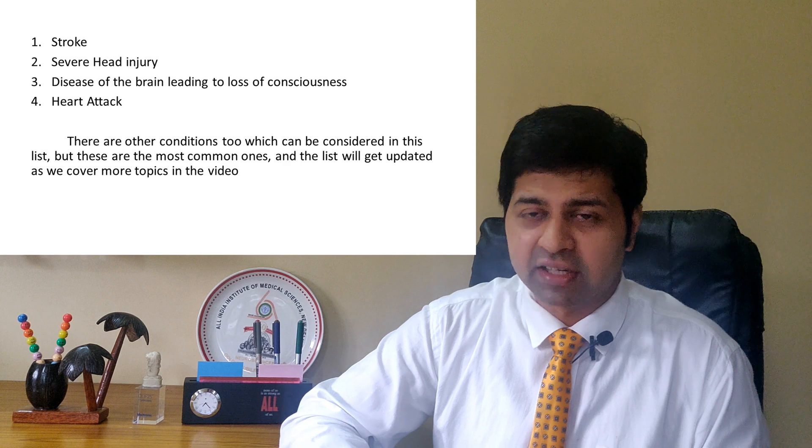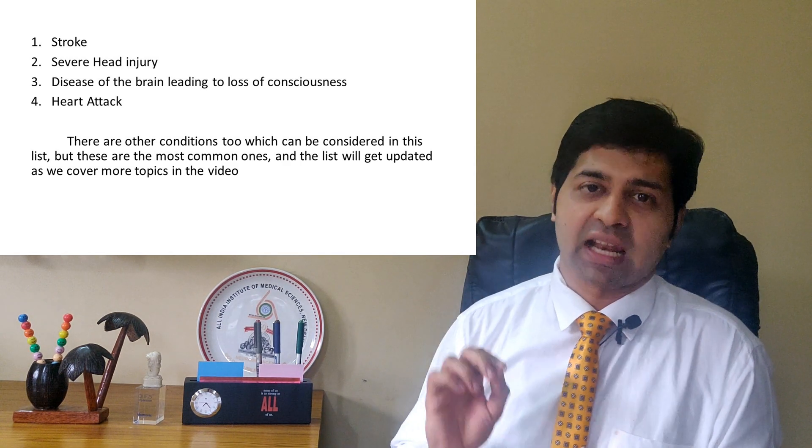The second emergency is severe head injury — due to an accident, fall from height, assault, or any cause. A severe head injury requires emergency consultation of a neurosurgeon and often an operative procedure to minimize and prevent irreversible brain damage. The third condition is any brain condition that has made the patient unconscious — an unconscious patient needs very urgent medical or surgical attention to prevent permanent brain damage. All three are related to the brain, highlighting how important it is and how permanent brain damage can be. The fourth condition, which everyone is aware of, is heart attack — take the patient to hospital within the golden hour.